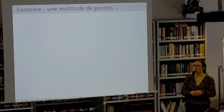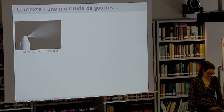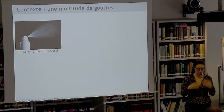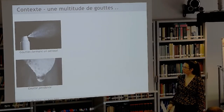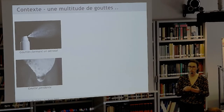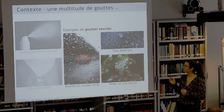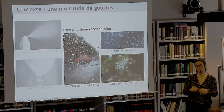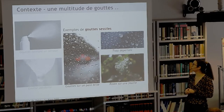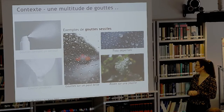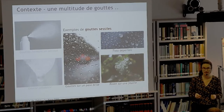Pour commencer, je vais parler du contexte et notamment des gouttes. Les gouttes sont des objets familiers qu'on rencontre dans la vie quotidienne. Il en existe différents types : les gouttes qui forment les aérosols, suspendues dans l'air ; les gouttes pendantes, par exemple au bout d'une stalactite ou d'un robinet qui fuit ; et enfin les gouttes sessiles, posées sur une surface en contact direct avec un matériau, comme les gouttes de pluie sur le pare-brise d'une voiture. Dans cette thèse, on se focalisera sur les gouttes sessiles.